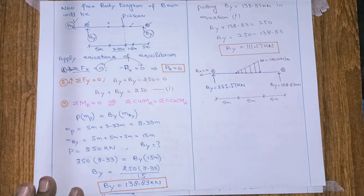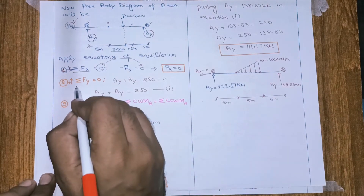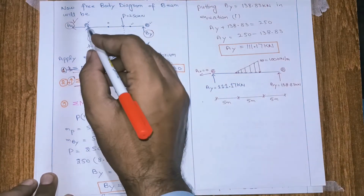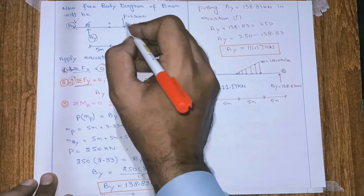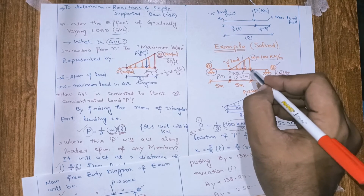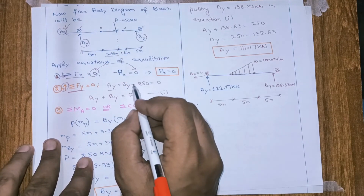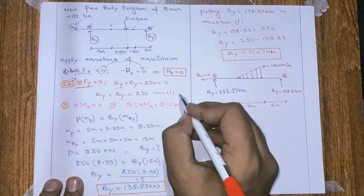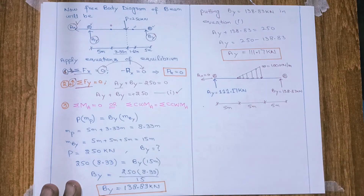Our next step is to find AY and BY using the remaining equilibrium equations. Applying ΣFy = 0 with upward forces positive: AY and BY are both upward (positive), while the equivalent load P of 250 kN acts downward (negative). So: AY + BY − 250 = 0, which rearranges to AY + BY = 250 kN. We have two unknowns in this equation, so we need a third equation to solve.